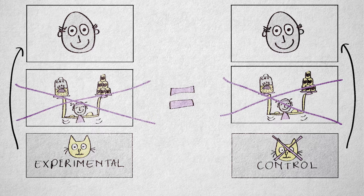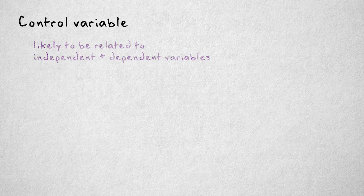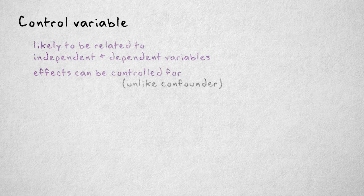Another possibility is to turn a confounder into a control variable. A control variable is a property that is likely to be related to the independent and dependent variable, just like a confounder. But unlike a confounder, a control variable is measured. Its effects can therefore be assessed and controlled for.